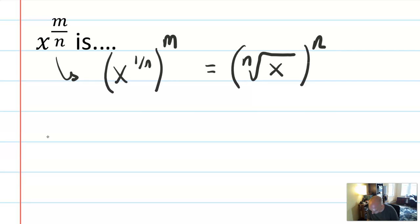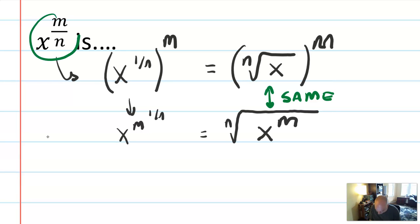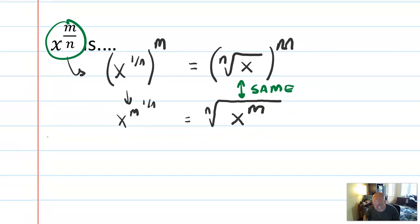But we can also think about this in reverse as x to the m to the 1 over n, which is the same as the nth root. So this is now putting the radical on the outside of x to the m. These are the same. And they mean the same thing as x to the m over n. And you can choose any of those three to express your results or solve your problems.